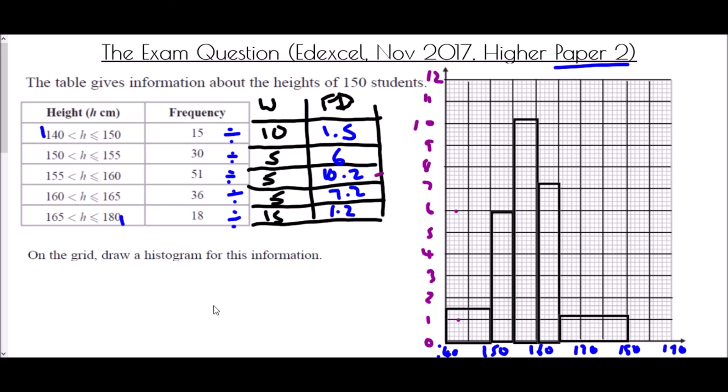And we have created our histogram showing all of that information. Just to finish, we should just add on this y-axis, we should add that we've used this as the frequency density. If you use the letters FD, that is sufficient to know it is frequency density.